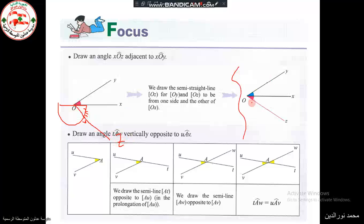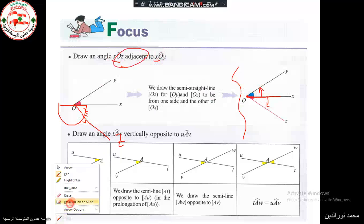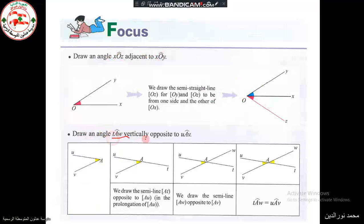As we see here, the two angles have the same vertex, a common side OX, and they lie at either parts of the common side. So they are adjacent. To draw two vertically opposite angles, we prolong the first side and the second side, and we easily get two vertically opposite angles. Vertically opposite angles are always equal and have the same measure.